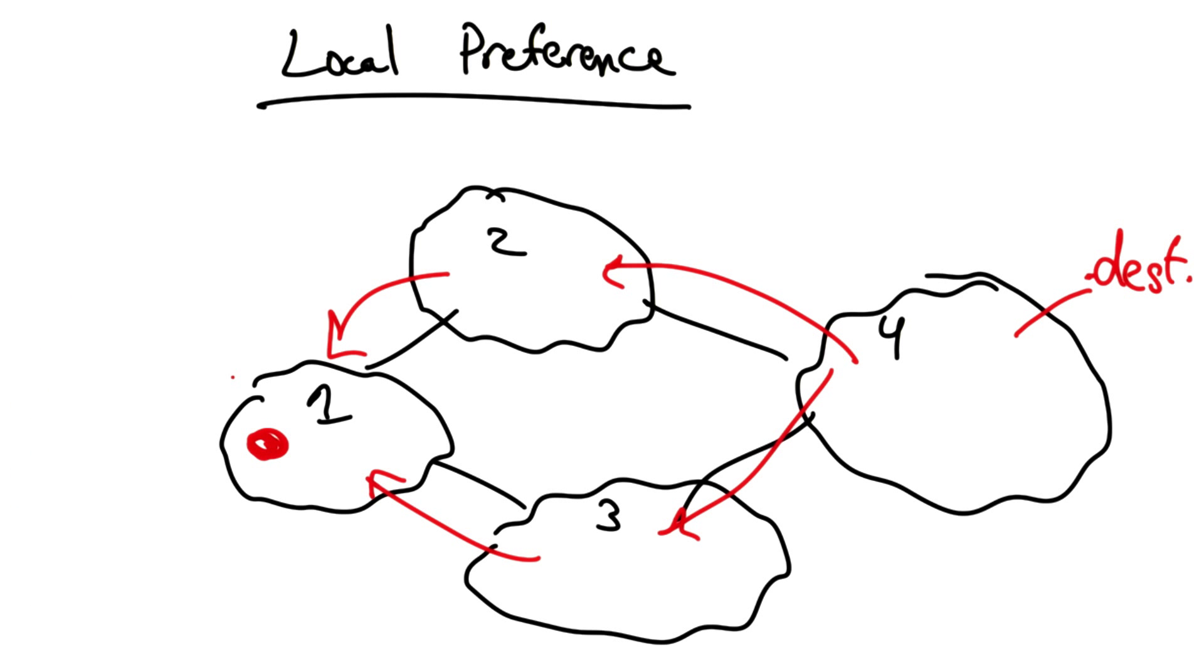Now a router in AS1 might learn two routes to a destination. One via the ASPath 2, 4, and the other via the ASPath 3, 4.